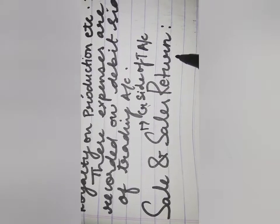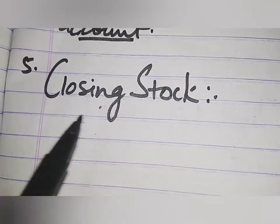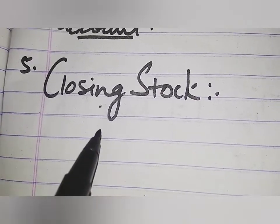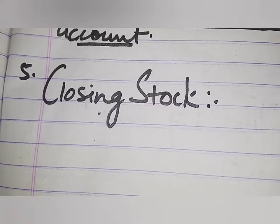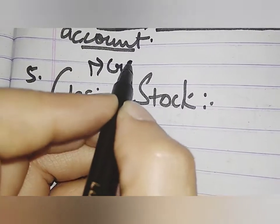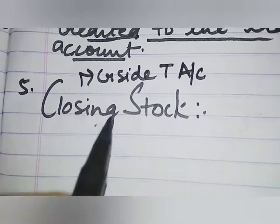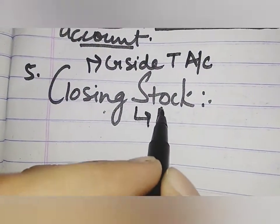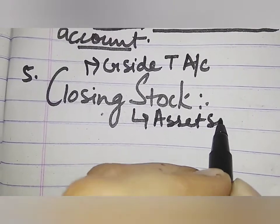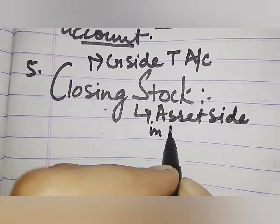The fifth item is closing stock. It means the goods which remain unsold at the end of the accounting year. It is shown on the credit side of the trading account and is also shown on the assets side in the balance sheet.